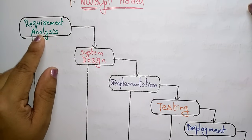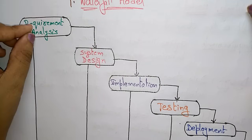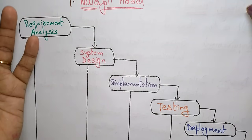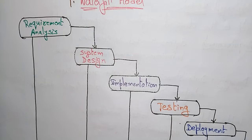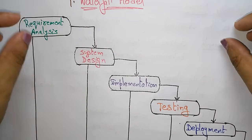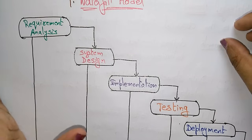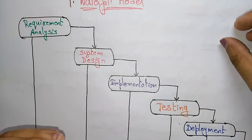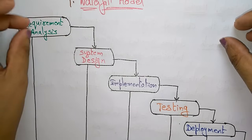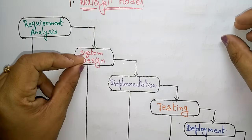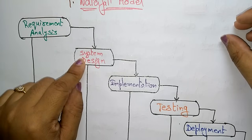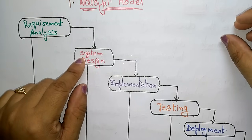The first phase is requirement analysis. Here, requirements are gathered and documented in a requirement specification document. The user gives specifications such as: what output they need, what the product should look like, what kind of app they want to run. Those specifications and ideas are given to the team and documented as requirements — both user requirements and customer requirements.